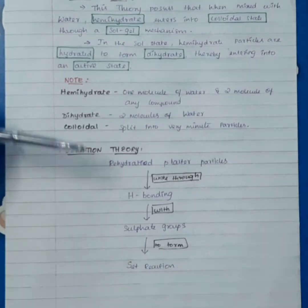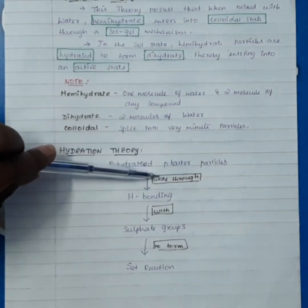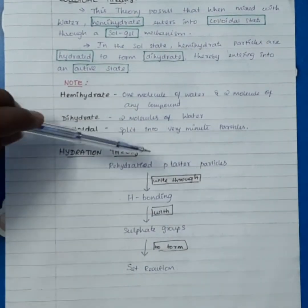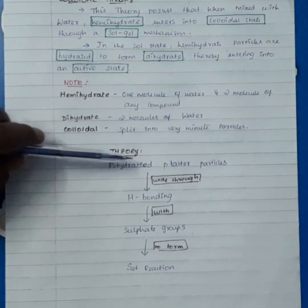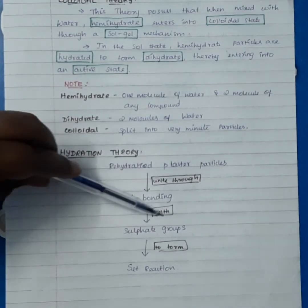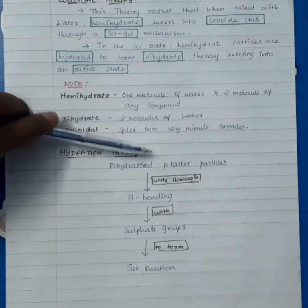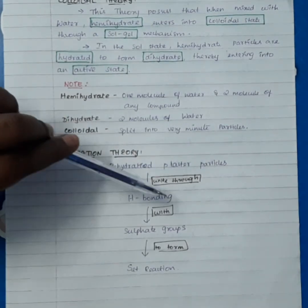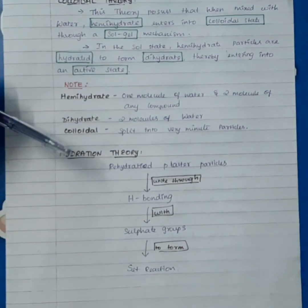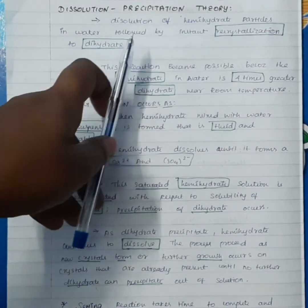Hydration theory states that rehydrated plaster particles unite through hydrogen bonding with sulfate groups to form the set reaction. In the simplified flowchart: rehydrated plaster particles form hydrogen bonds, and these hydrogen bonds with sulfate groups unite together to form the set reaction.